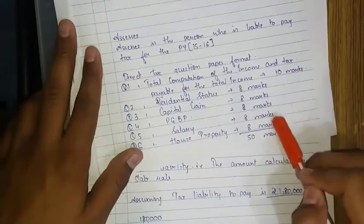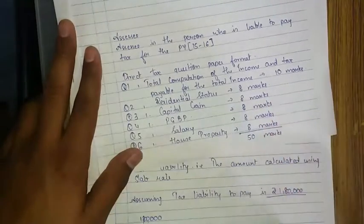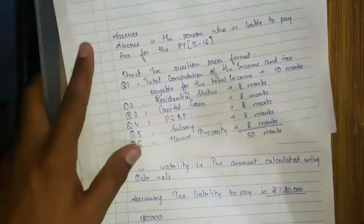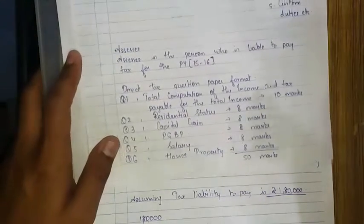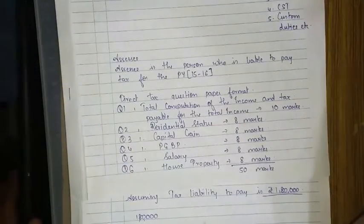Skipping these two chapters right now, I'll tell you at the last how we have to do with these chapters. House property is also a simple thing. In this you may be knowing the renting system - we rent our house.